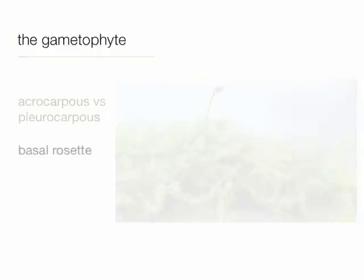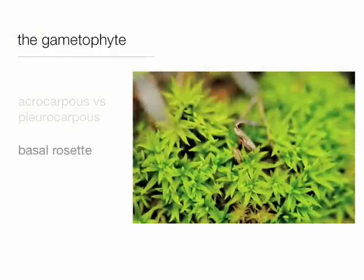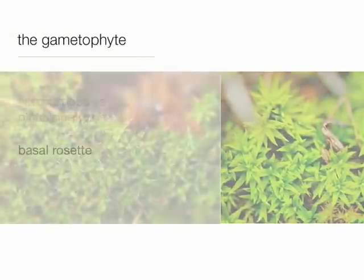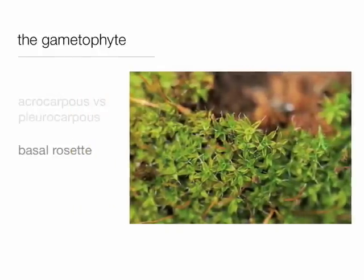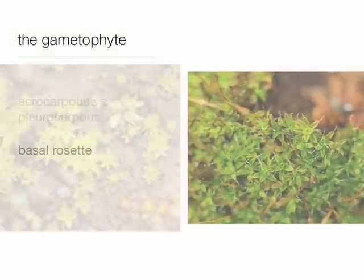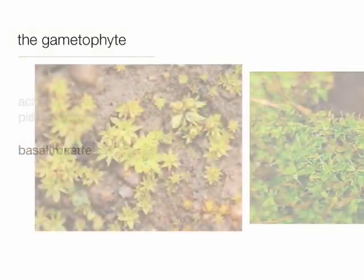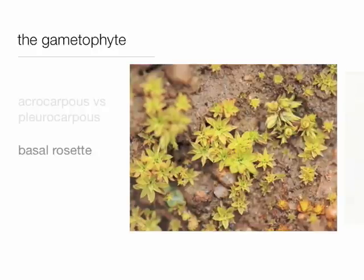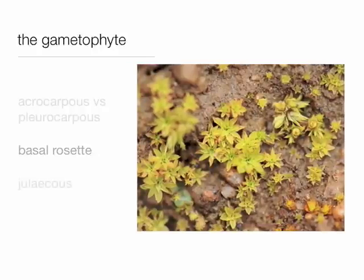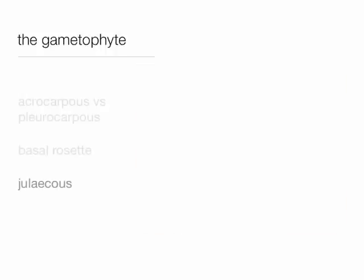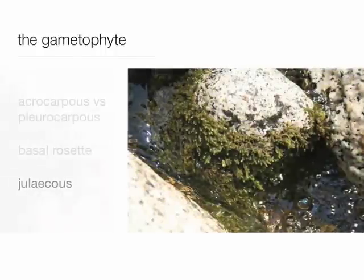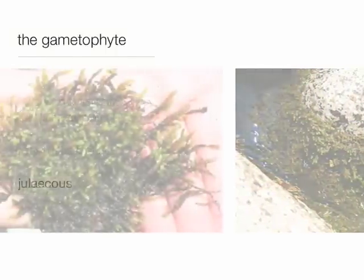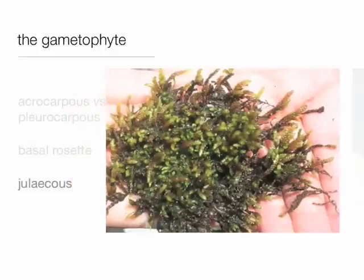Then we have the basal rosette growth form — usually a cluster of leaves that radiate from a common point, often low to the ground just above the substrate, so there is no elongate stem. A stem that is julaceous would have tight, rounded stems with leaves that cling against the stem, giving a very tight and rounded appearance, as in the case with Scleropodium.